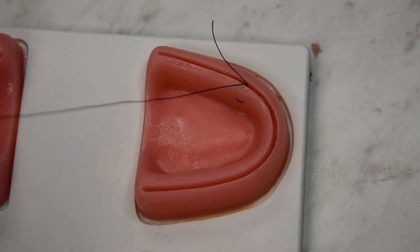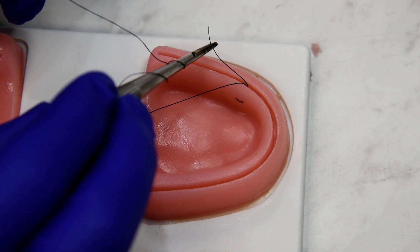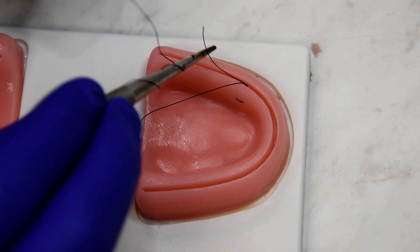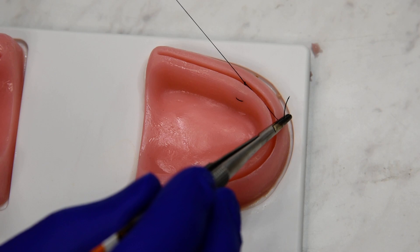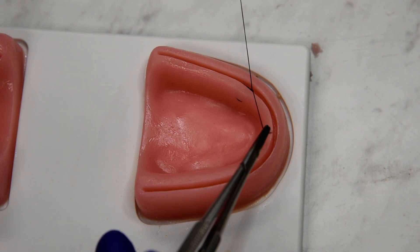So to tie it off, tie it off like a simple knot like you normally would, and this suture, besides that little loop on the palate, ends up being completely underneath the flap.